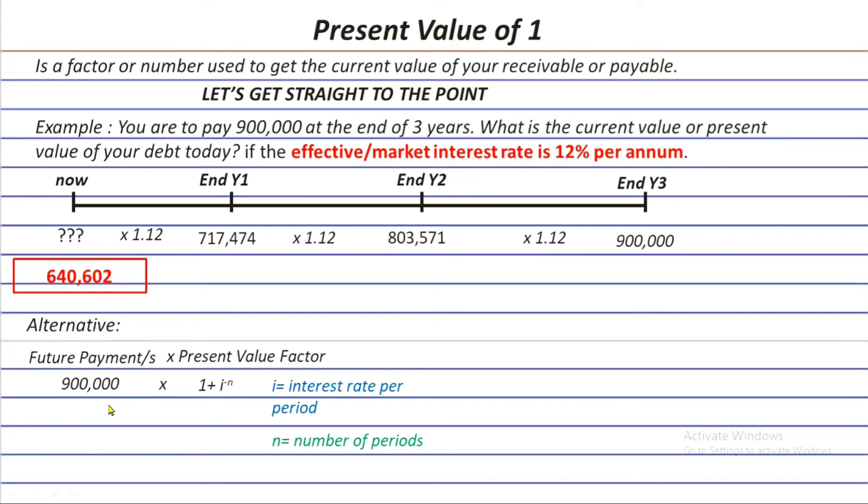Substituting further, we will have 900,000 times 1.12 raised to the power of negative 3. And then, you will get the factor 0.71178, which is already rounded off to the nearest 5 decimal places. You just need to multiply this 2 and you will get 640,602, which is the same with here. That's the concept of the present value of 1 factor and its application.